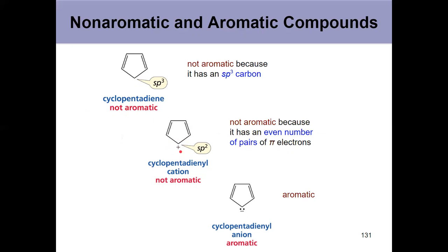So, change it to sp2, cyclopentadienyl cation, still not aromatic because it only has 4 pi electrons. It doesn't have the 4n plus 2. Two pairs of electrons doesn't work.